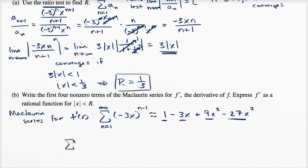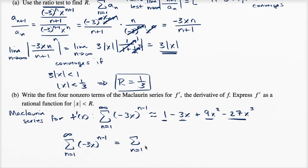Now, they say express f prime as a rational function for the absolute value of x being less than r. This sum, assuming it converges within the radius of convergence, you might recognize this. I could write it starting at n equals zero to infinity of negative three x to the n, because the first term is to the zeroth power. You might recognize this as a geometric series with common ratio negative three x.